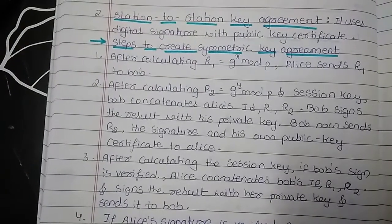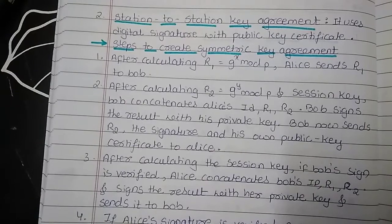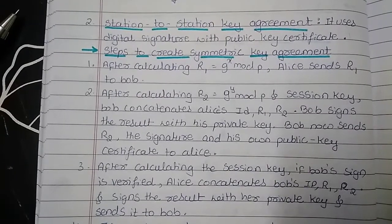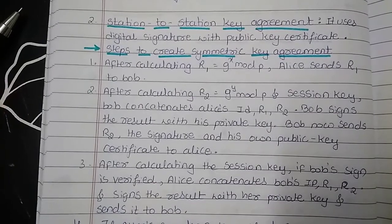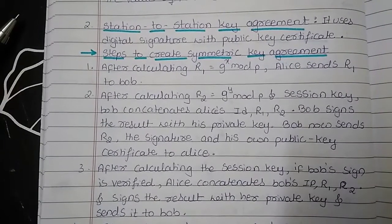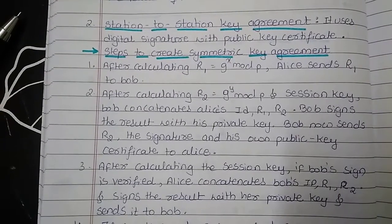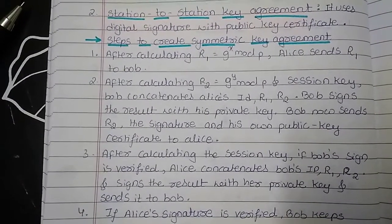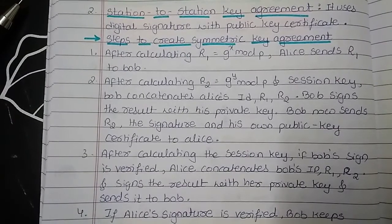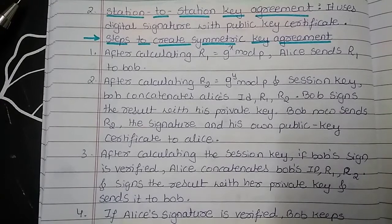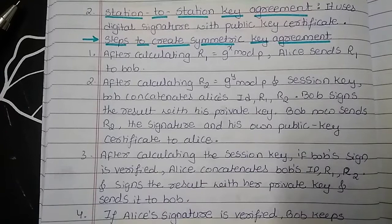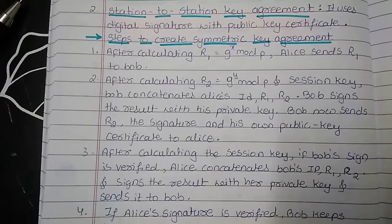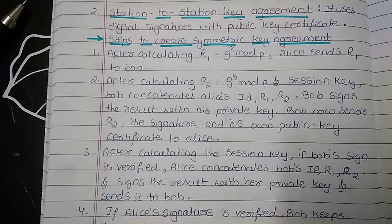After seeing the example of obtaining the symmetric key using Diffie-Hellman protocol, now let us see the second way of finding the symmetric key agreement. This is the station-to-station key agreement. This particular method is going to use a digital signature with a public key certificate. The steps: first, once the value of R1 is found, Alice sends R1 to Bob. After calculating R2 and the session key, Bob concatenates Alice's ID, R1, and R2, then signs the result with his private key. Bob then sends the value of R2, the signature, and his own public key certificate to Alice.